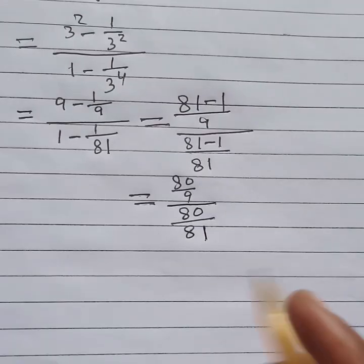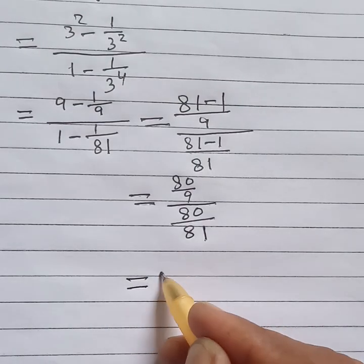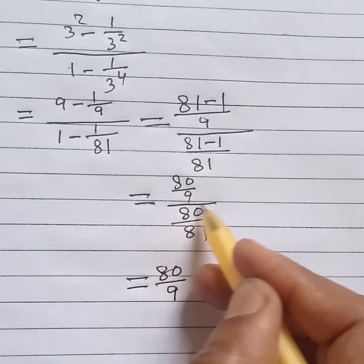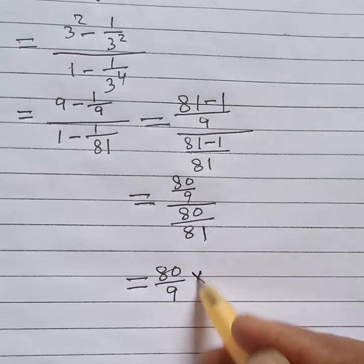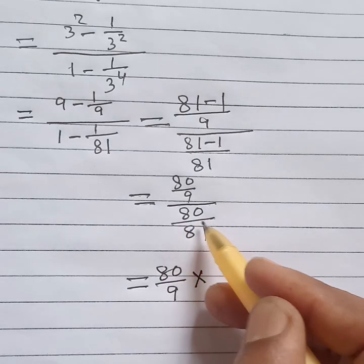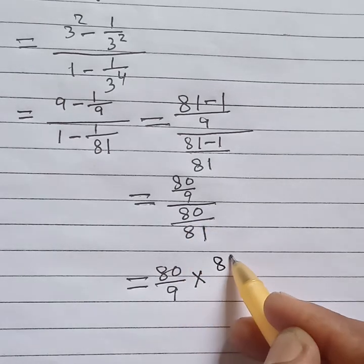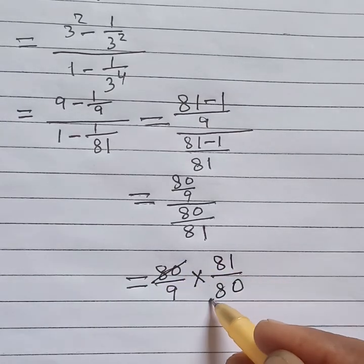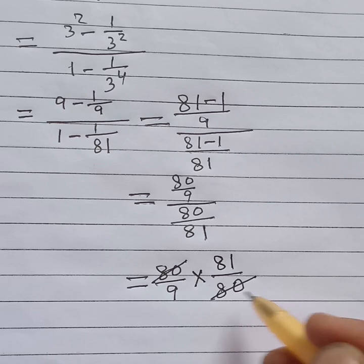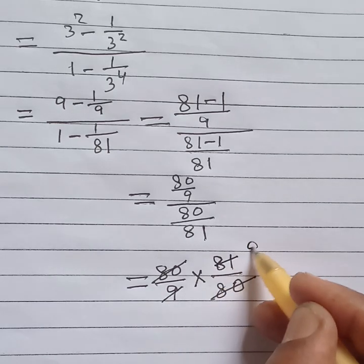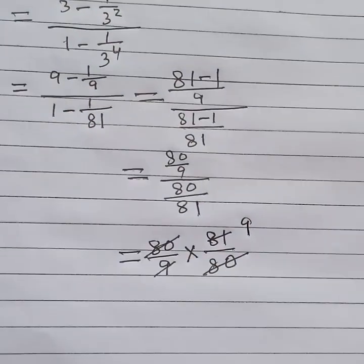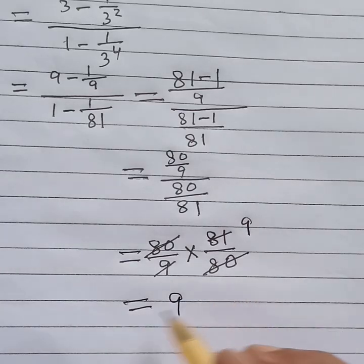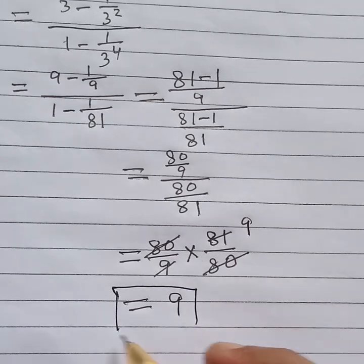The next step: 80 divided by 9, divided by 80 over 81. Dividing means we multiply by the reciprocal, so this becomes 80 over 9 multiplied by 81 over 80. The 80s cancel, and since 9 nines are 81, we get 9. This is the final answer.